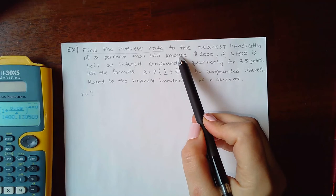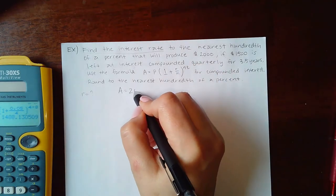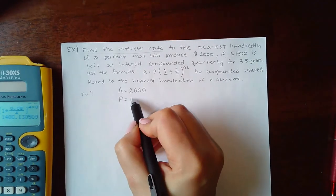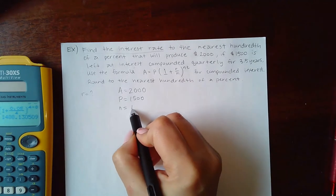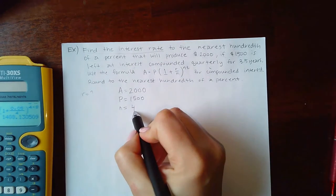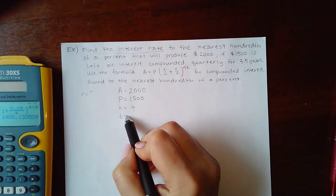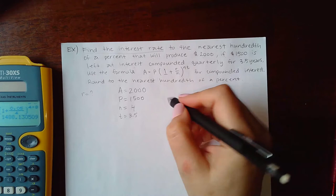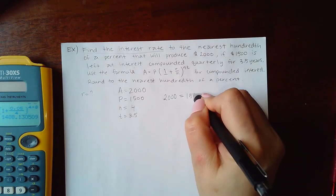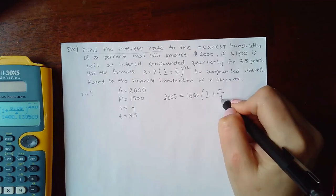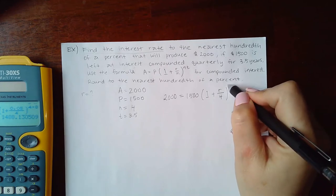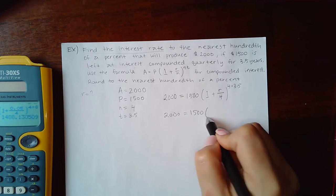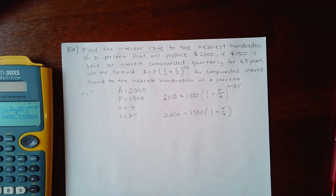We want $1,500 to grow to $2,000, compounded quarterly (n equals 4) over 3.5 years. Plugging in: 2000 equals 1500 times (1 plus r over 4) raised to the 4 times 3.5 power. The only simplification I can do right now is 4 times 3.5, which equals 14, giving (1 plus r over 4) to the 14th power.